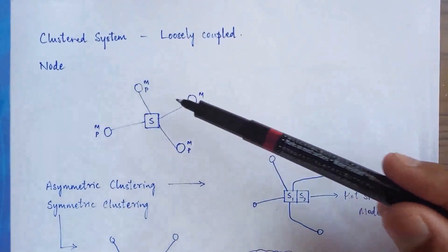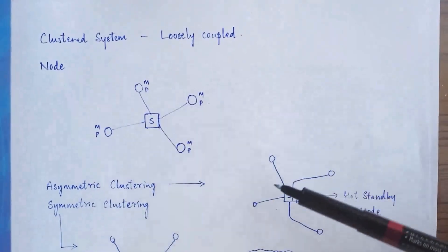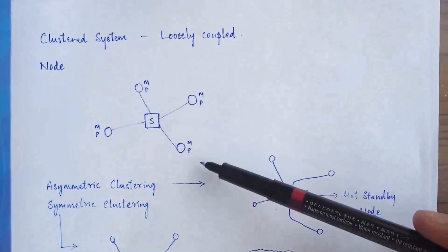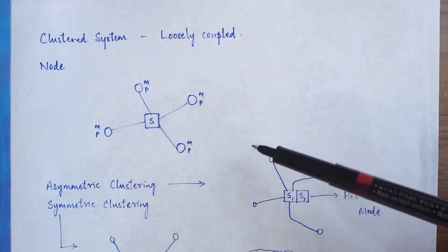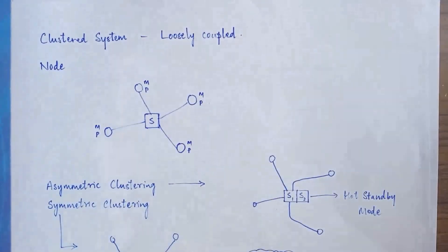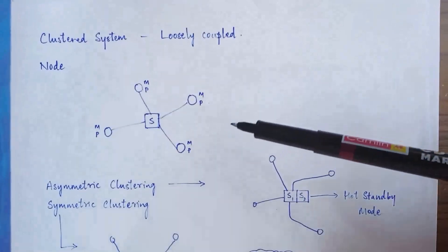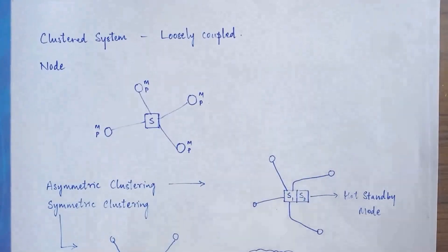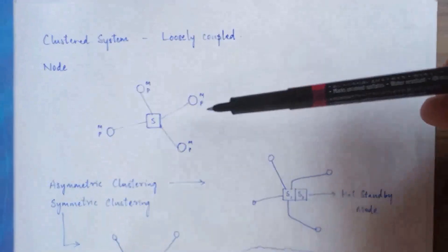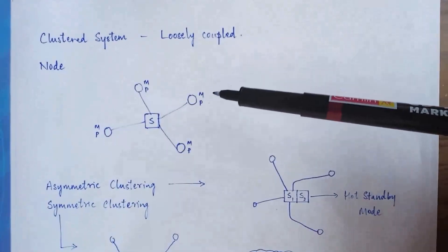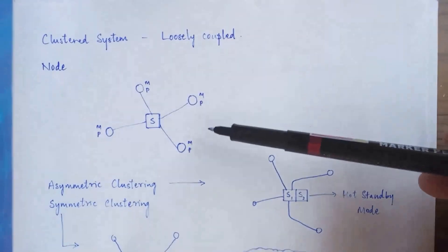A node is a unit of the clustered system, and all these nodes are looked after by a server. These nodes are also called clients. So basically, a clustered system is like a server-client type of system. These clients can be tightly coupled or loosely coupled — they can have a single processor or multiple processors. The main thing to note is that they have their own memory and peripheral devices attached to them.